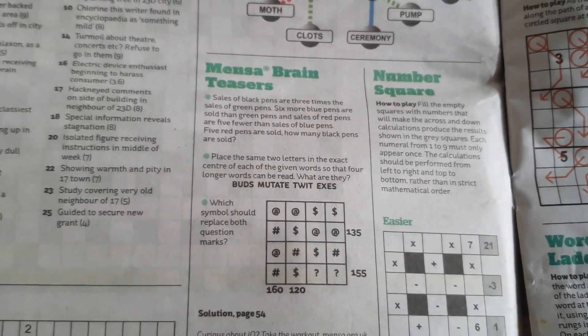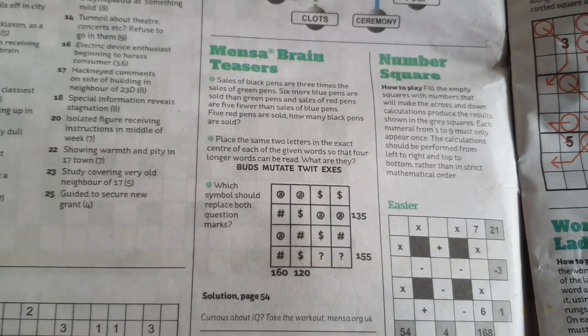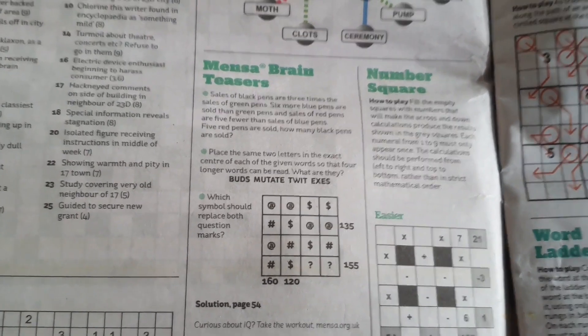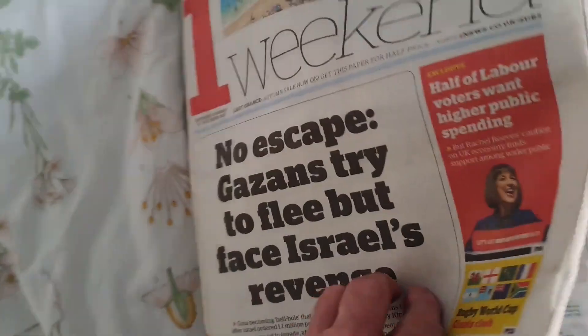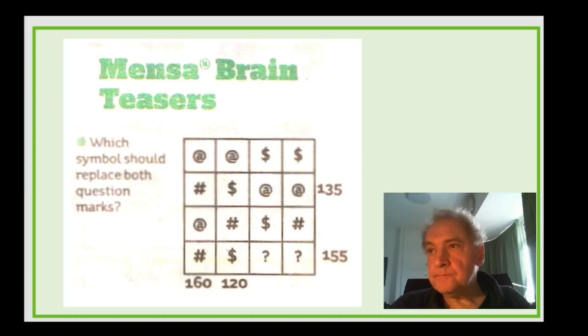So in the weekend edition of the i-newspaper there's a big pullout section for puzzles. Right, good morning. All we've got here is a Mensa brain teaser, it's a Mensa puzzle, and what we have to do is find out which symbol should replace both question marks. So these question marks down here.